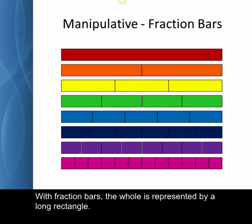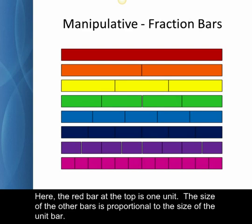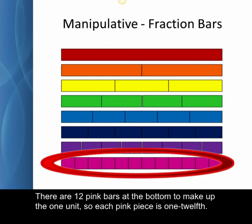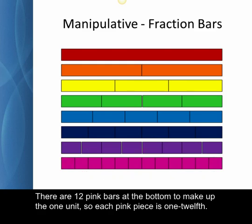With fraction bars, the whole is represented by a long rectangle. Here, the red bar at the top is one unit. The size of the other bars is proportional to the size of the unit bar. There are twelve pink bars at the bottom to make up the one unit, so each pink piece is one twelfth.